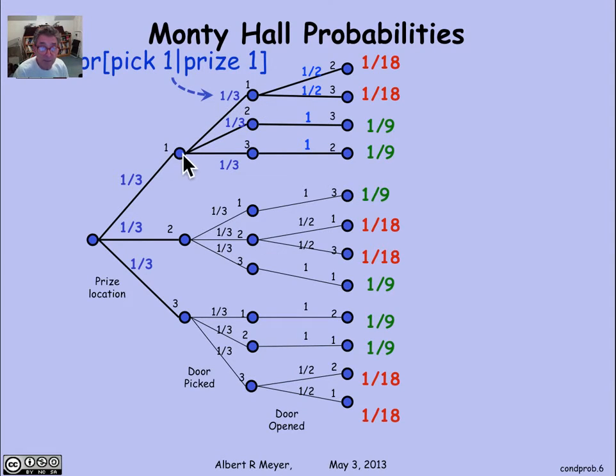And that 1 third, we figured out that once the prize is at door 1, in fact, wherever the prize is, the probability that the contestant will pick 1 is 1 third. This number 1 third is the probability that the contestant will pick 1 given that the prize is at door 1.